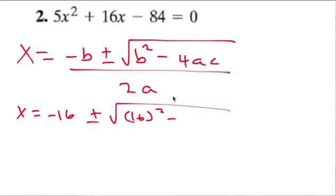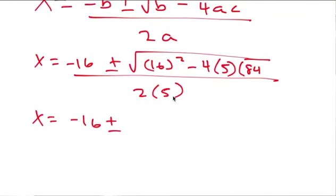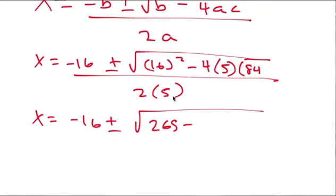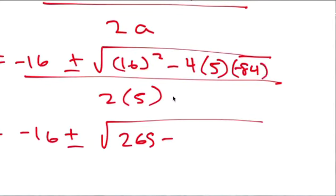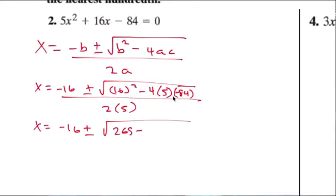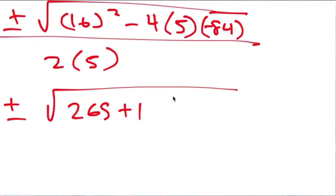...of 16 squared minus 4 times a, which is 5, times c, which is 84, all over 2 times 5, which is 10. So we've got x equals negative 16 plus or minus the square root of 265 minus 4 — oh, that's a negative 64. 84 by the way, that's a minus, so that's a negative. Four times negative 5 times 84 gives us a positive 1680.